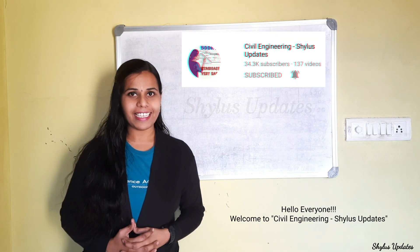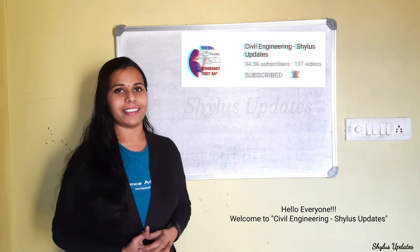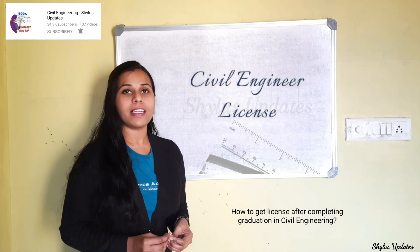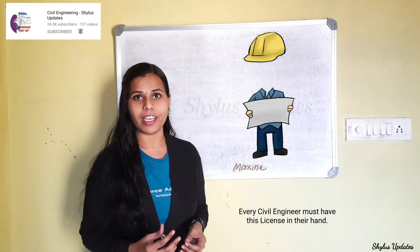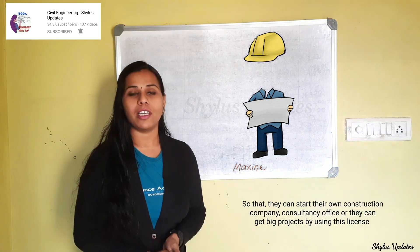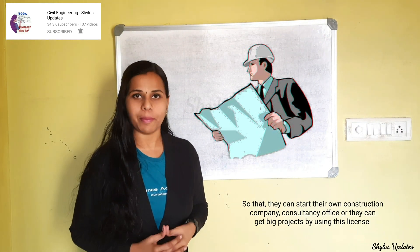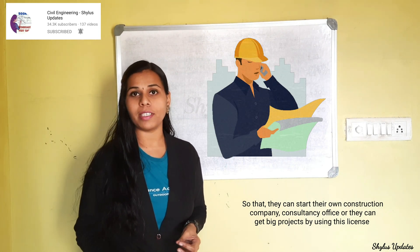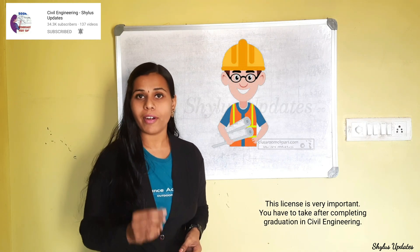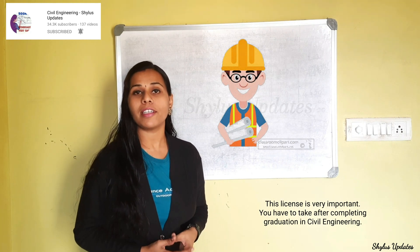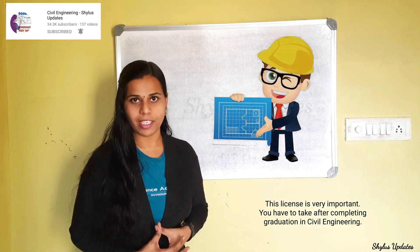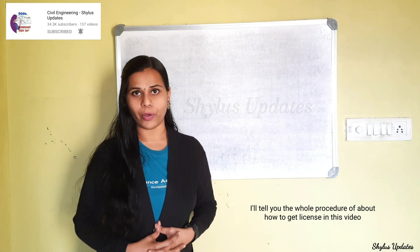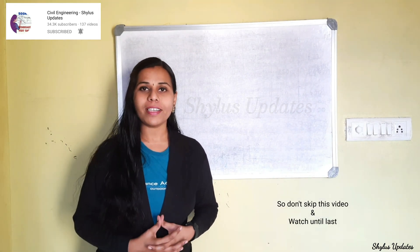Hello everyone, welcome to Civil Engineering Shirus Updates. How to get a license after completing graduation in civil engineering? Every civil engineer must have this license in their hand so that they can start their own construction company or any consultancy office, or they can get big projects by using this license. This license is very important. I will tell the whole procedure of how to get a license in this video, so watch until the end.